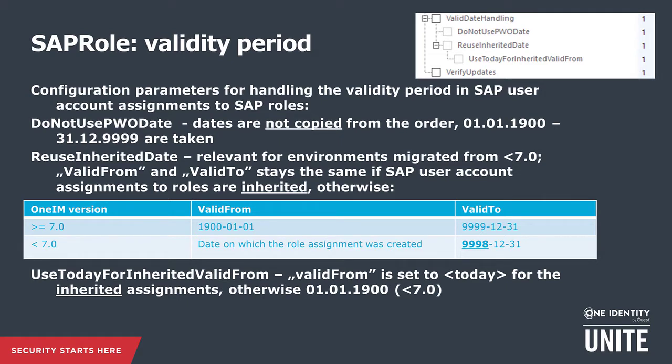There are several configuration parameters for handling the validity period in SAP user account assignments to roles. For example, 'Do Not Use PWO Date', if set to active, will not copy the order date but use 1st of January 1900 and 31st of December 9999 as assignment dates. The default behavior is to use the PWO date for requests.